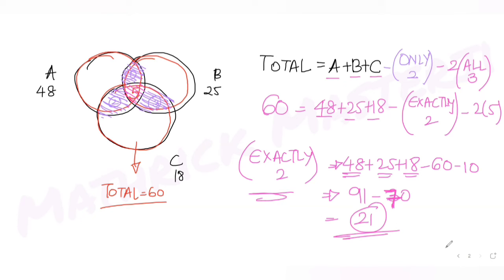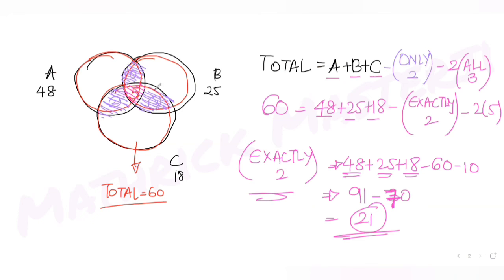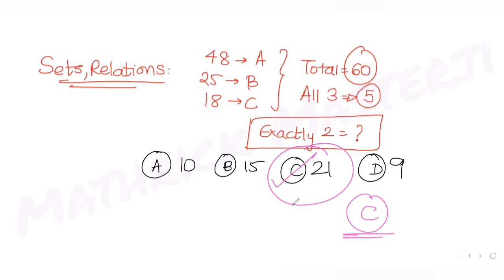So the number of men who won medals in exactly two of the three events is 21. Looking at the answer choices, 21 matches option C. So C is the correct answer for this question. We used the idea of Venn diagrams to draw the three circles, developed the inclusion-exclusion formula, and found that exactly 21 men received medals in exactly two events.